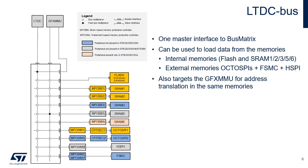This bus connects the LTDC master interface to the bus matrix and is only used to load data from the memory. This bus targets the GFX MMU in addition to the data memories — internal flash memory, internal SRAMs (SRAM1, SRAM2, SRAM3, SRAM5 and SRAM6) and external memories through FSMC, HSPI1 or OctoSPIs.